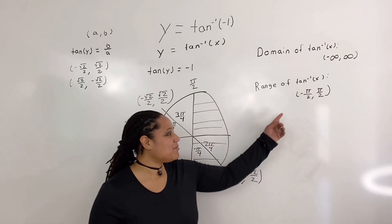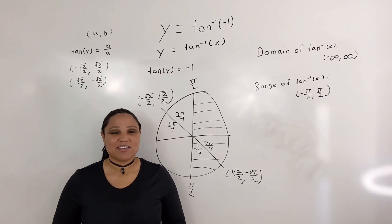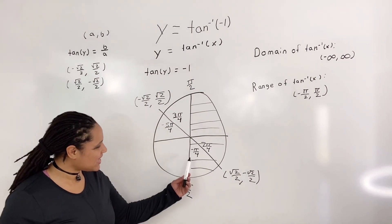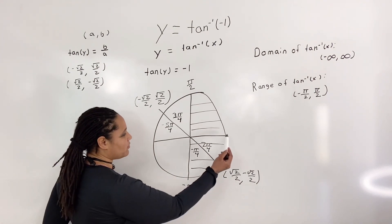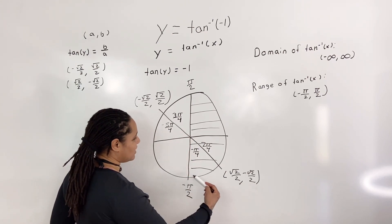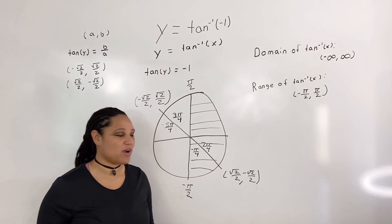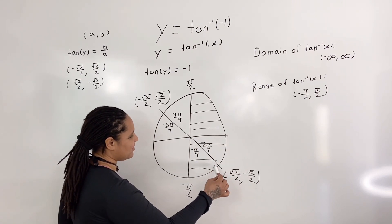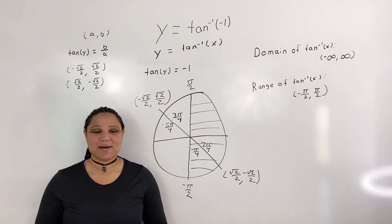Keep in mind that we have open parentheses, meaning we're not including negative π over 2 or π over 2, but values can come very close to them. Now we ask: which value do we choose — 7π over 4 or negative π over 4? Well, 7π over 4 starts from 0 and comes around, clearly going outside of our range. So we cannot choose 7π over 4. However, negative π over 4 starts from 0, goes in the negative direction, and stays within the range. So we can only choose negative π over 4.